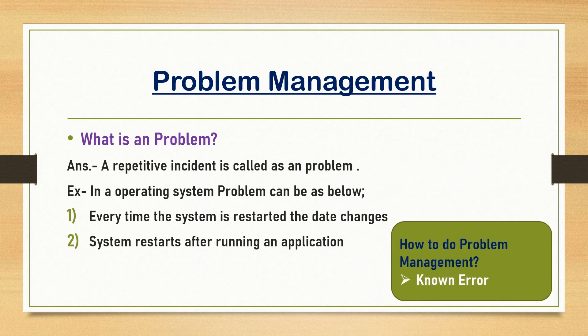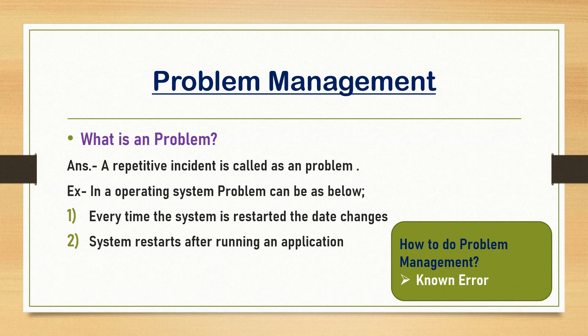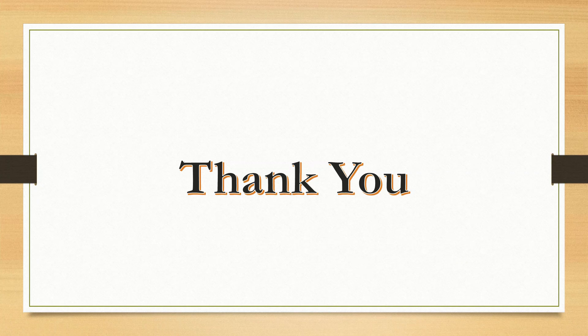How to do problem management? The organization or service provider uses something called a known error. They analyze the repetitive incidents, find the root cause of the particular incident, and provide a solution for it — that is called a known error. These known errors are stored inside a database called the known error database. This covers event management, incident management, and problem management.